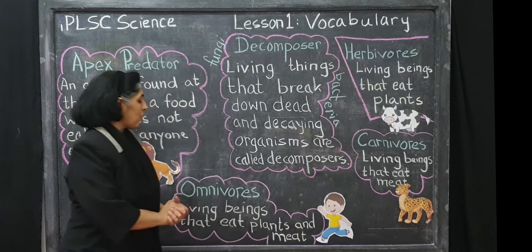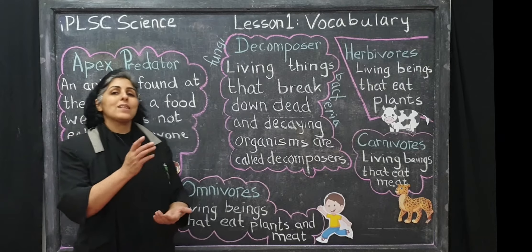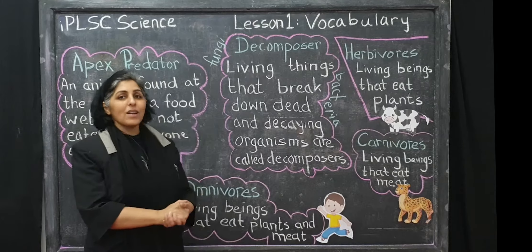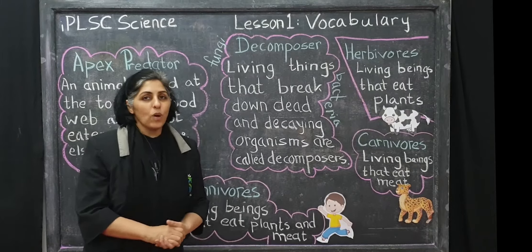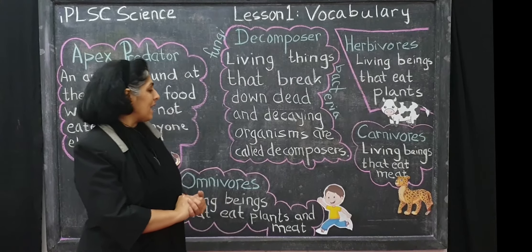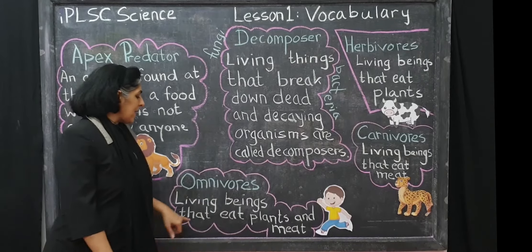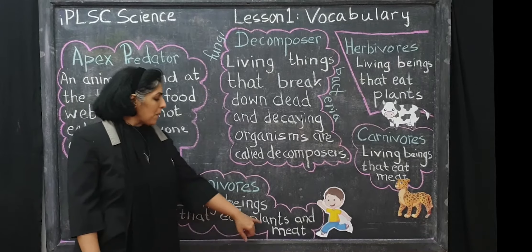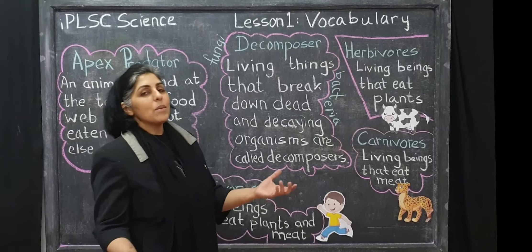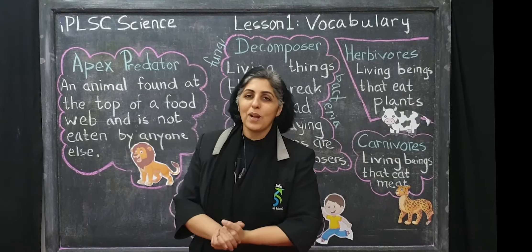Now we move on to omnivores, and that brings us to the conclusion of our Lesson 1 of IPLSC Science. Omnivores are living beings that eat both plants and meat — namely many of us, right?